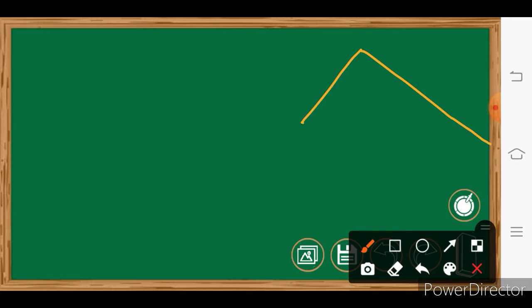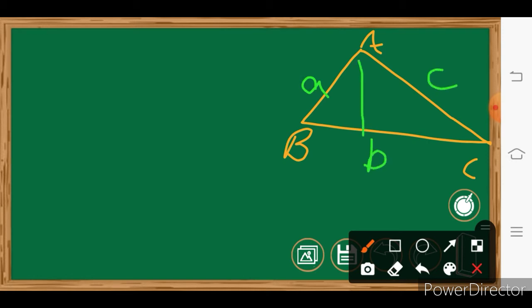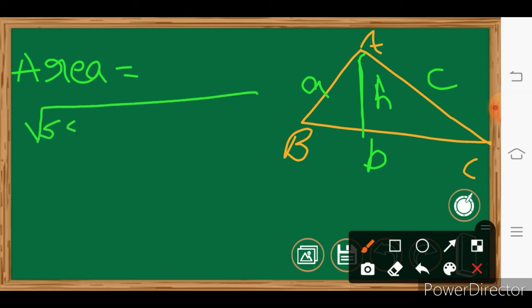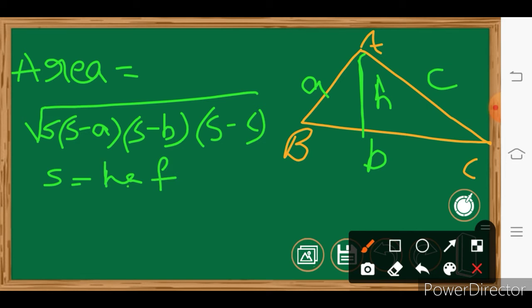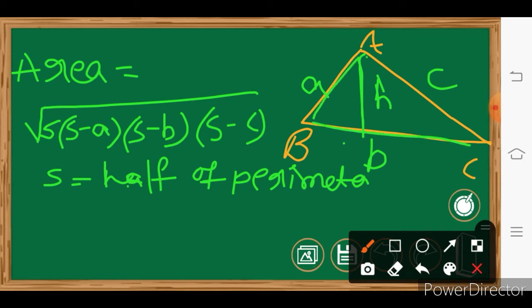Next, the area of a scalene triangle. In triangle ABC, this length is a, this is b, this is c, and this is the height of the triangle. The area formula is Heron's formula: the square root of s times (s minus a) times (s minus b) times (s minus c), where s is half of the perimeter. Here a is the first side length, b is the second side length, and c is the third side length.